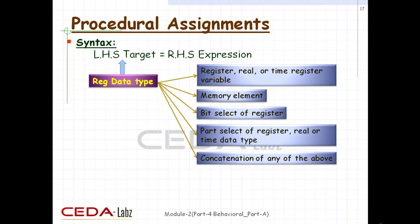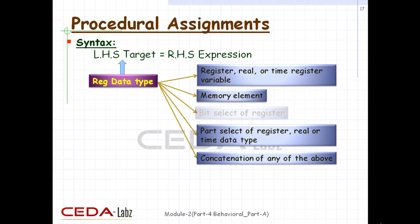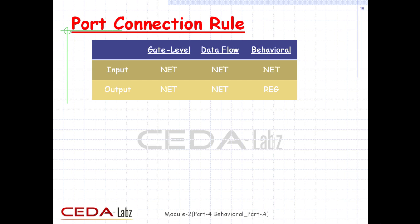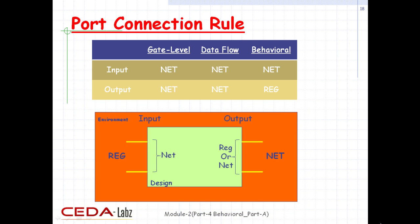The left-hand side of a procedural assignment must be of reg data type and can be one of the following: register, real, time register variable, memory element, bit-selective register, part-selective register, real or time data type, or concatenation of any of the above. A port consists of two units — one internal to the module and one external — and they are connected. Internally, input ports must always be of type net; externally, inputs can be connected to a variable of type reg. Output ports can be of type reg or net internally, but externally outputs must always be connected to a net.